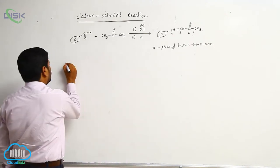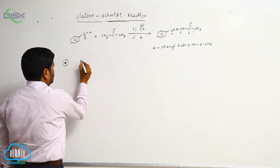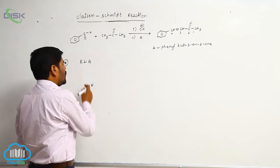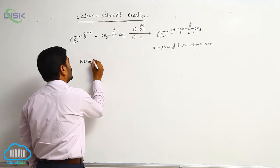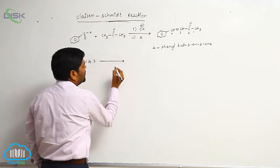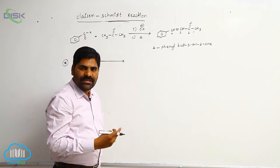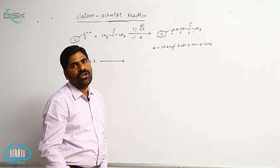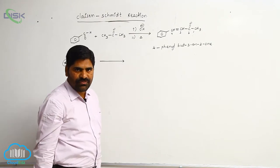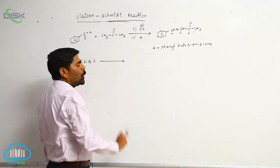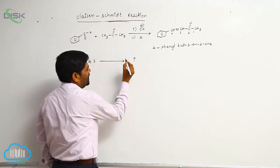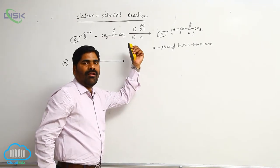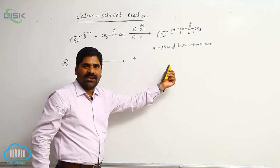Now, an important point to remember: electron withdrawing groups present at the para position increase the reactivity of benzaldehyde. Electron withdrawing groups increase the reactivity of aromatic aldehydes in Claisen-Schmidt reaction.